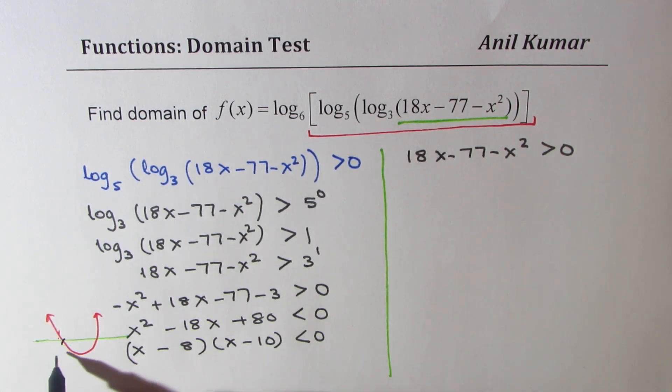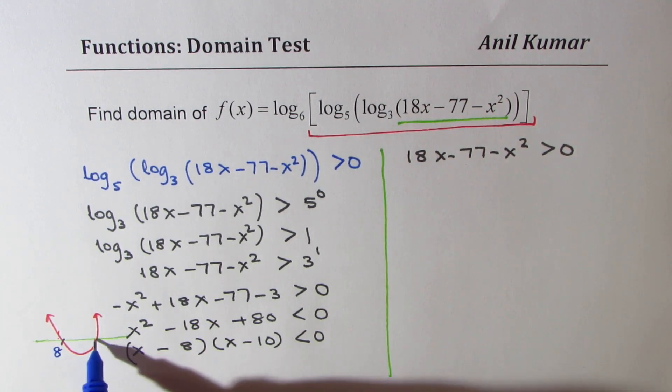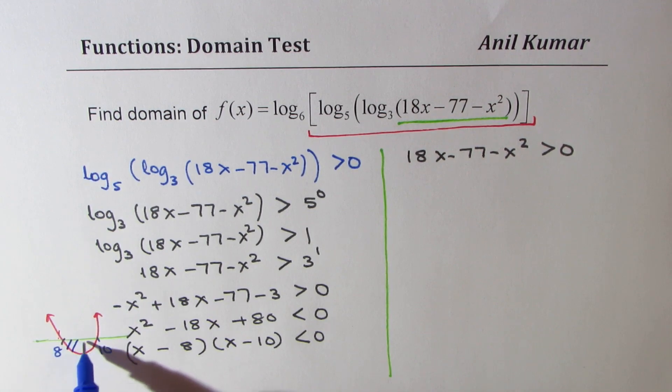The roots are at 8 and 10. So let's write in blue 8 and 10. Less than 0 means we are looking for this portion.